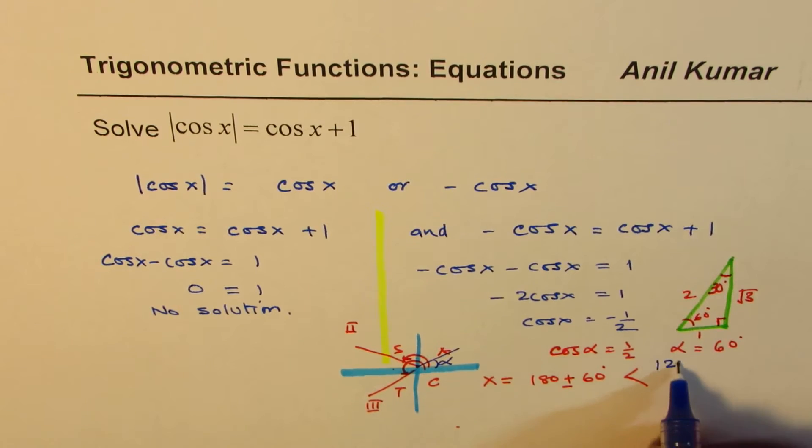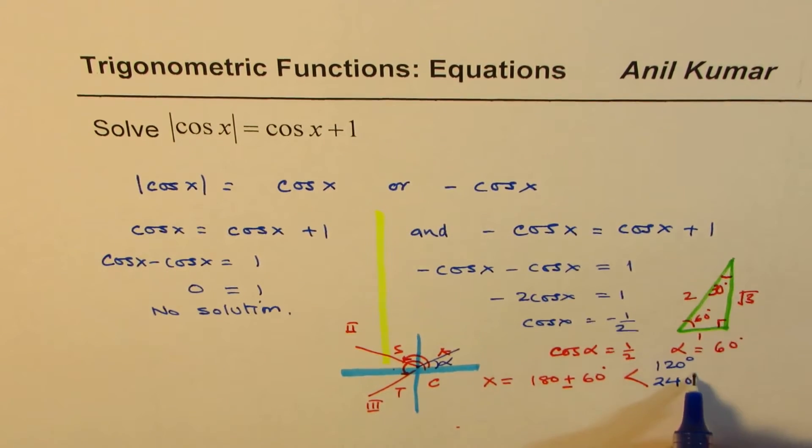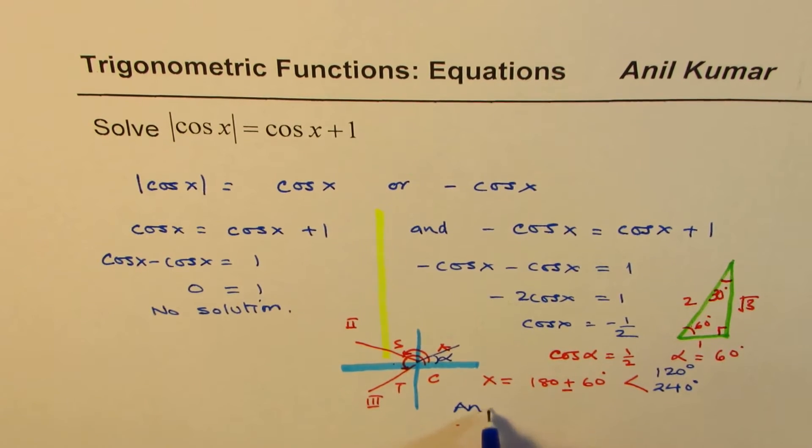First one, we could write this as 120 degrees. The other one as 240 degrees. So we have two solutions to this equation. We can write down the answer, which is x equals to 120 degrees and 240 degrees.